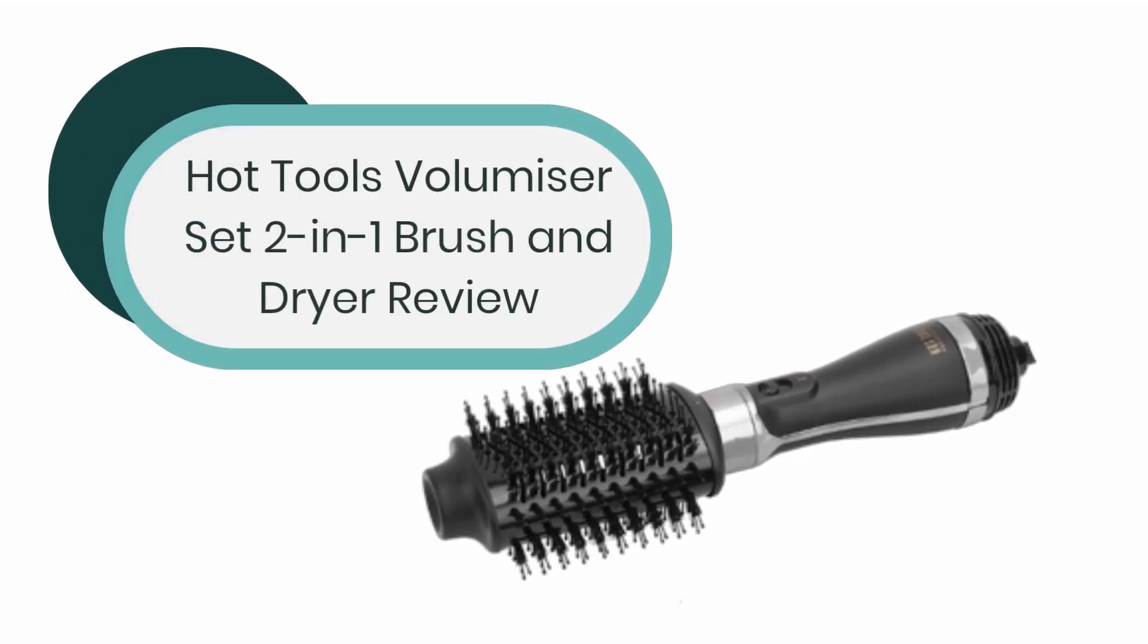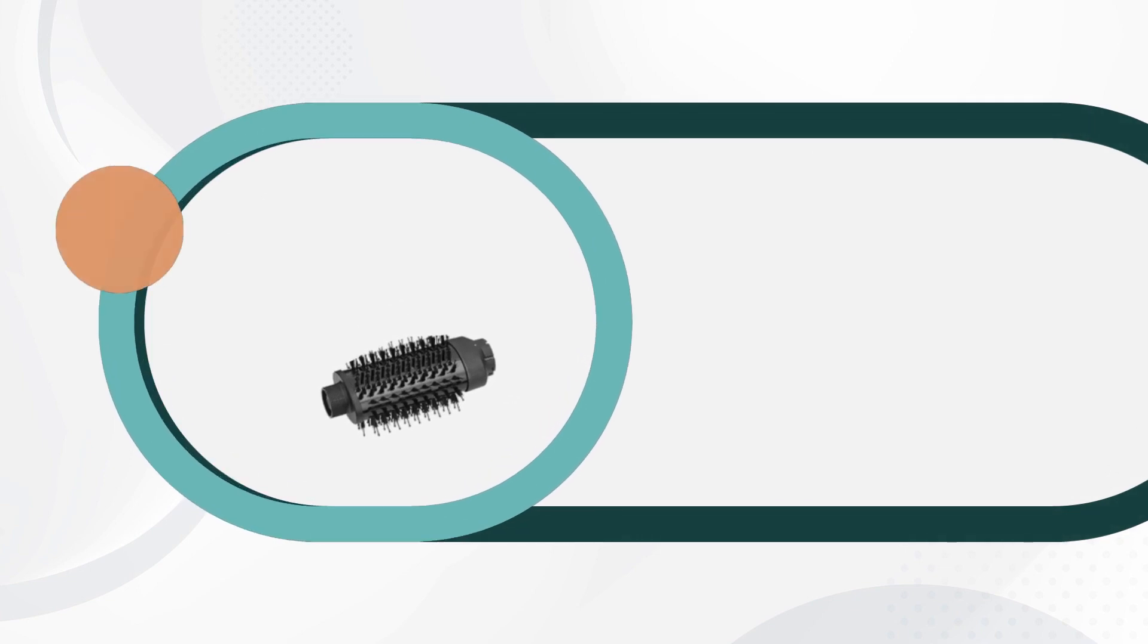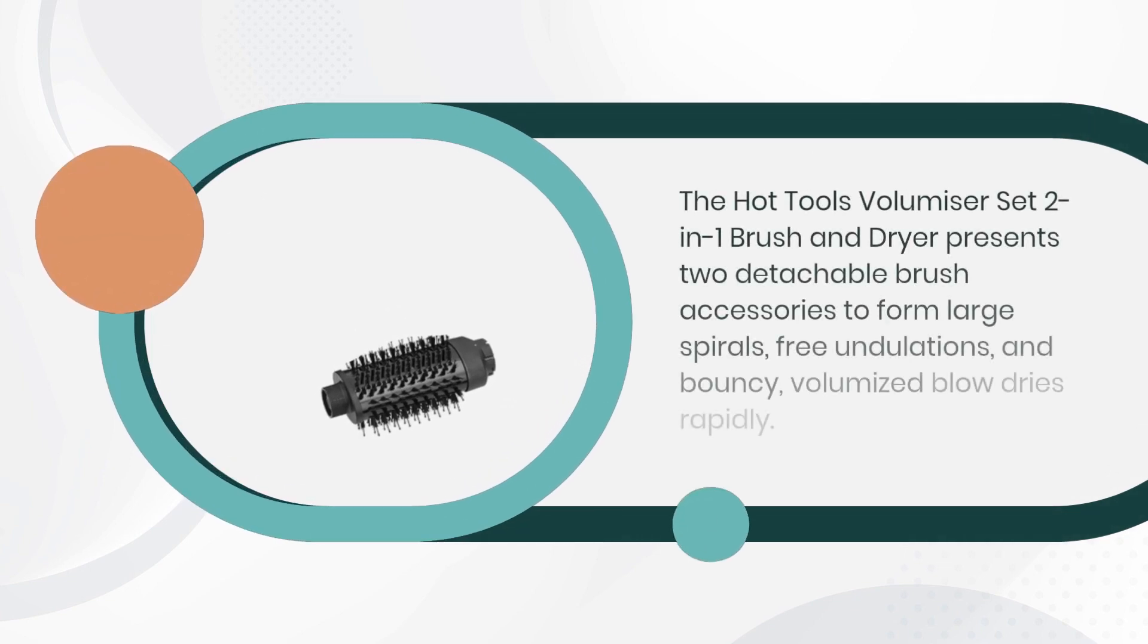Hot Tools Volumizer Set 2-in-1 Brush and Dryer Review. The Hot Tools Volumizer Set 2-in-1 Brush and Dryer presents two detachable brush accessories to form large spirals, free undulations, and bouncy, volumized blow dries rapidly.